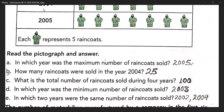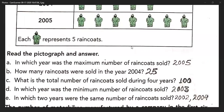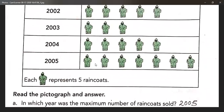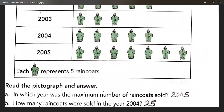Question B: How many raincoats were sold in the year 2004? We need to find out the number of raincoats sold in the year 2004. Taking the help of the pictograph, in the year 2004: 5, 10, 15, 20, 25 — so 25 raincoats were sold. The answer will be 25.